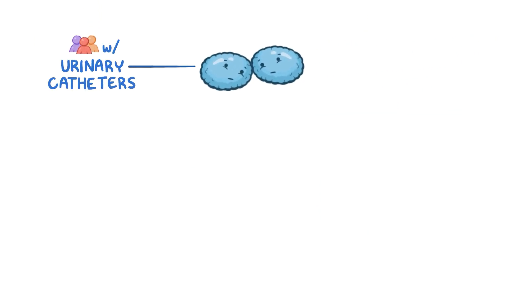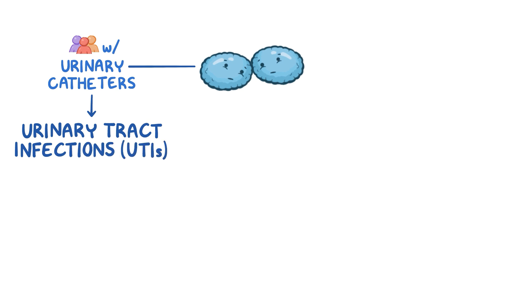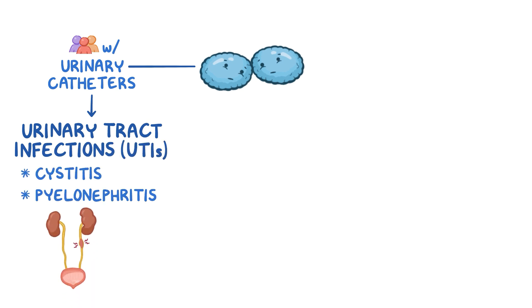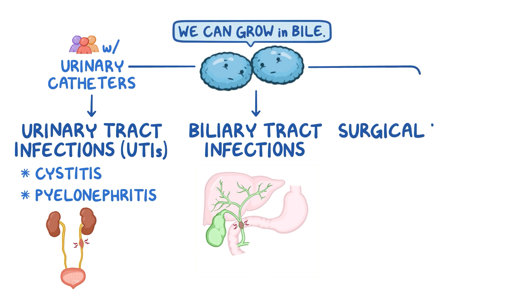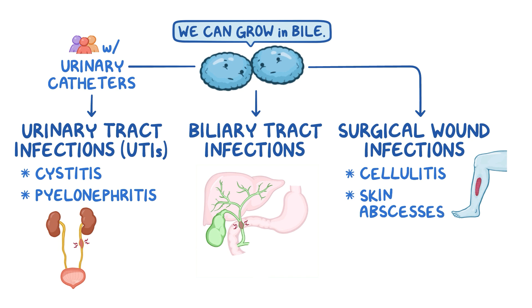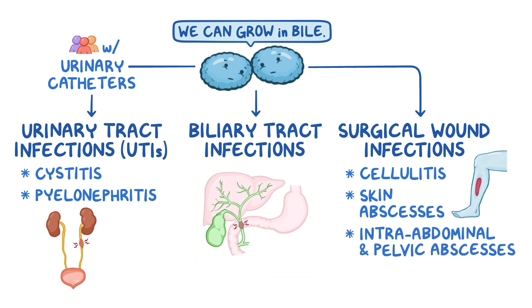In people with urinary catheters, enterococci cause urinary tract infections, or UTIs, like cystitis and pyelonephritis. Enterococci can also cause other uncommon infections like biliary tract infections due to its ability to grow in bile, surgical wound infections like cellulitis or skin abscesses, and intra-abdominal and pelvic abscesses.